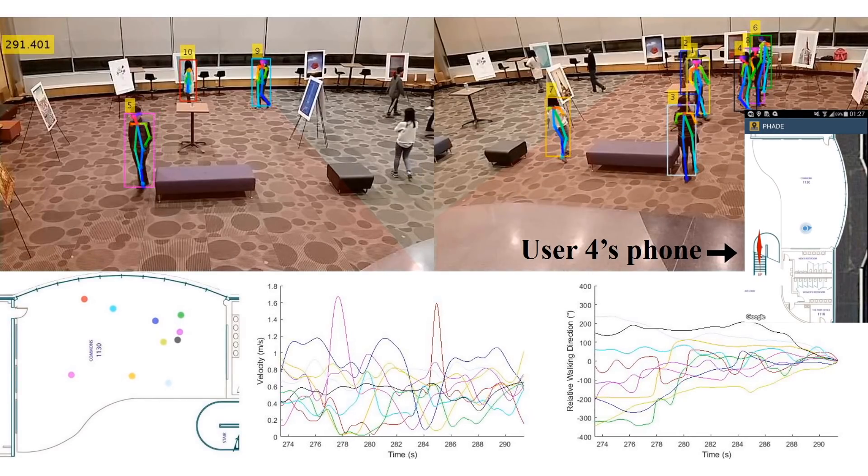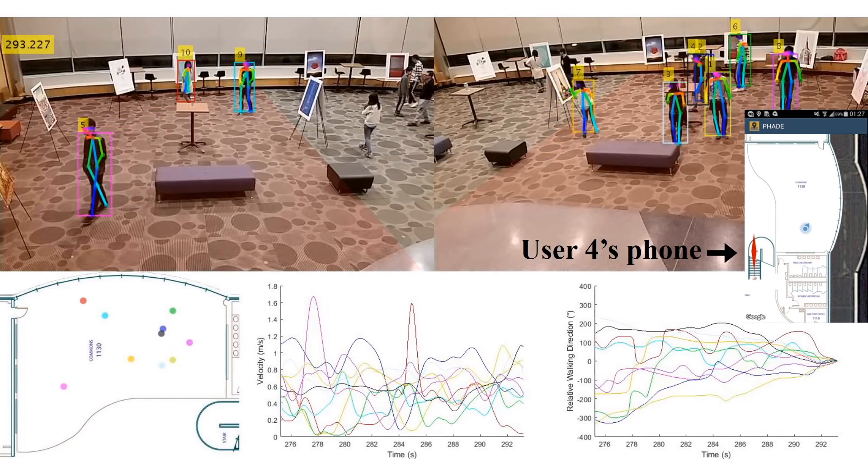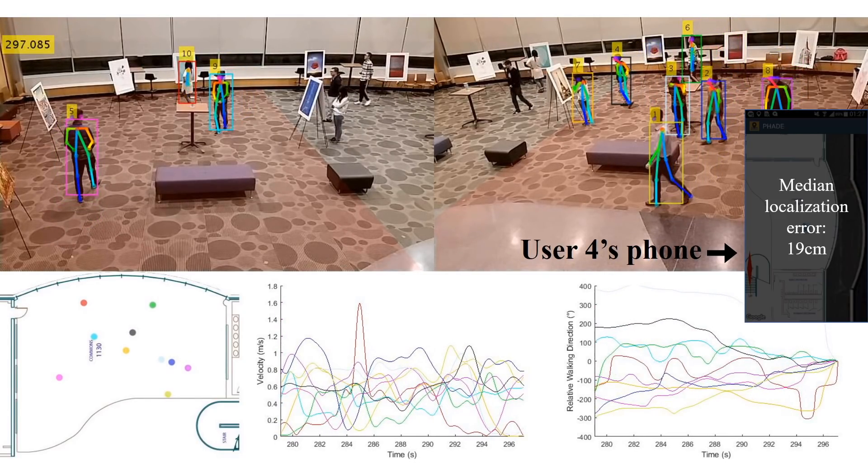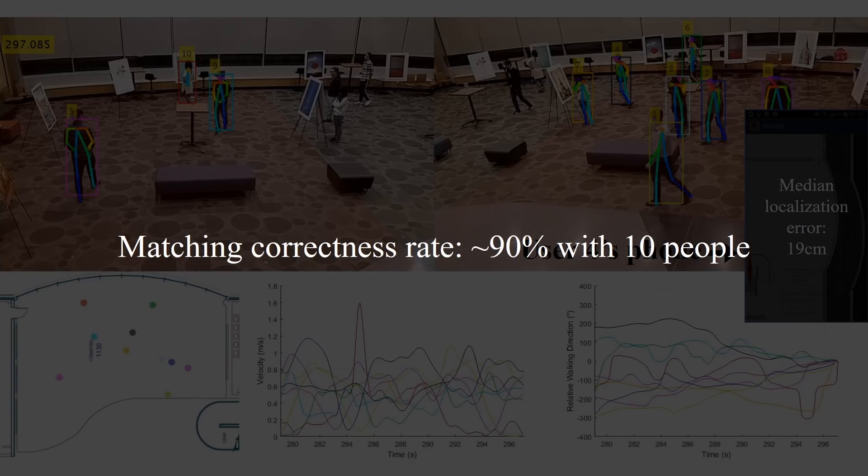We set up a mock museum and send customized messages to each user. Our system achieves a localization error of 19 cm and about 90% matching correctness.